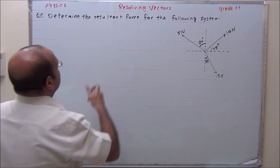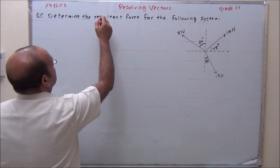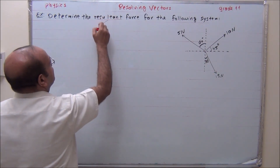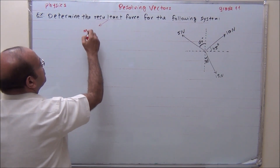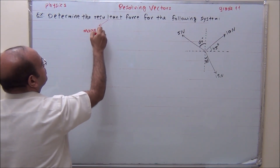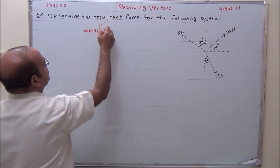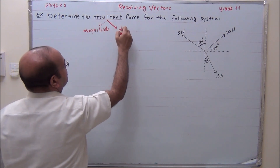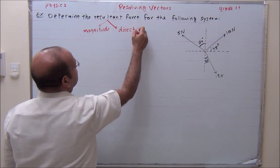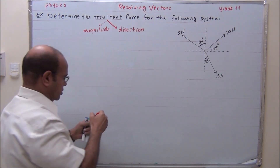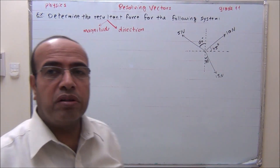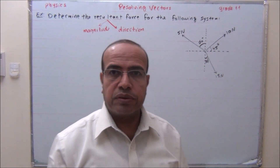The resultant means we need to find both magnitude and direction. So we need to determine magnitude and direction. First, we resolve the vectors.